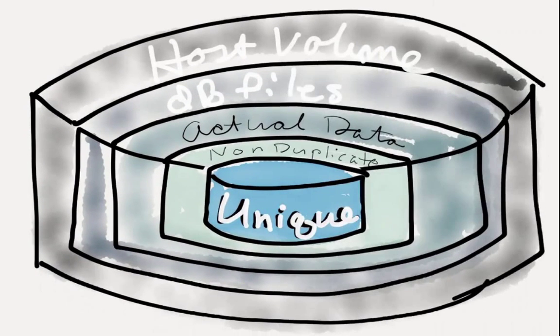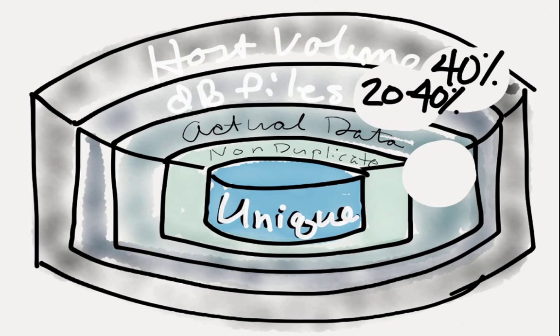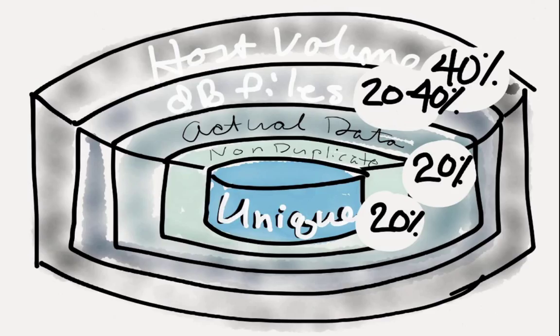We've learned that through thin provisioning techniques, we can save as much as 40% of the necessary capacity to store our Exchange databases. By not writing zeros, we've learned that we can save between 20% and 40% in addition. We've also learned that because we don't duplicate data elements, we can save another 20%. We also learned that because we can remove repeating characters and strings of characters, we can remove another 20% of our storage requirements.